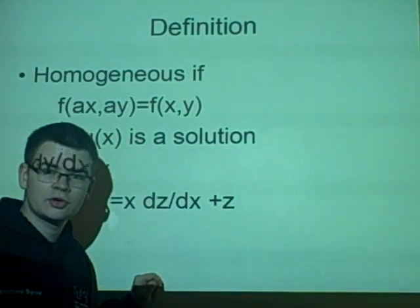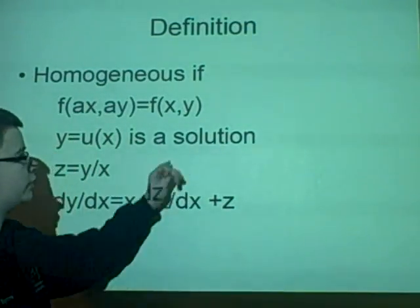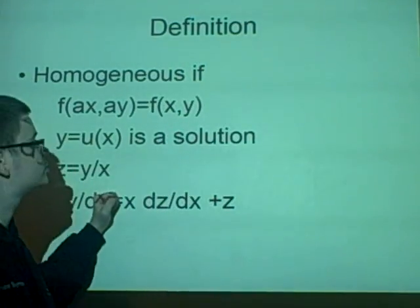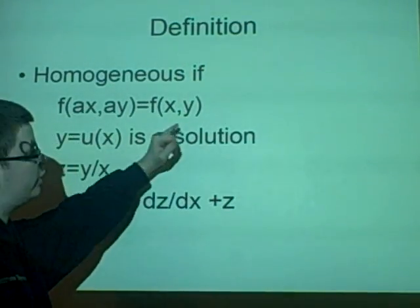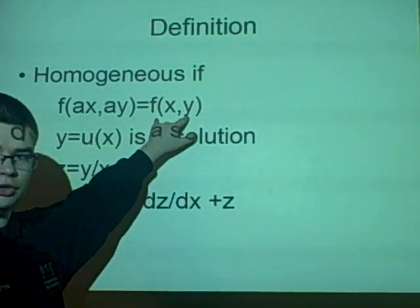First off, a homogeneous equation is an equation involving x and y, where if you changed x for ax and y for ay, you would end up with the original equation.